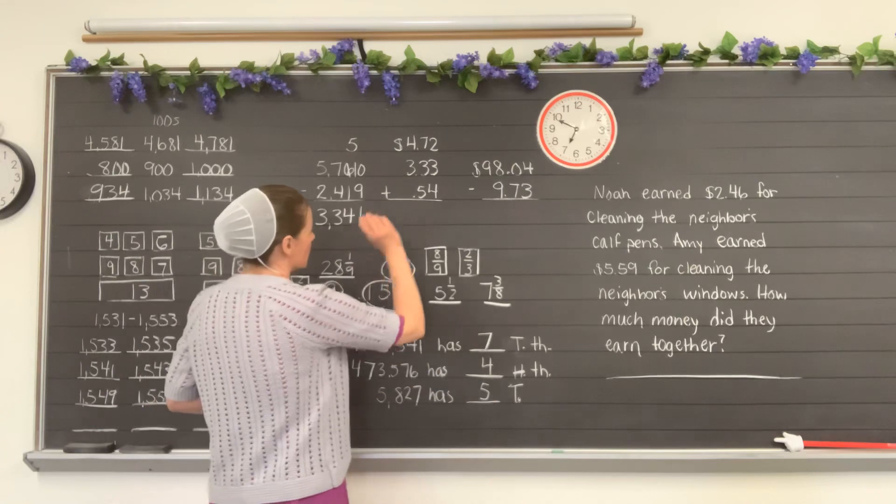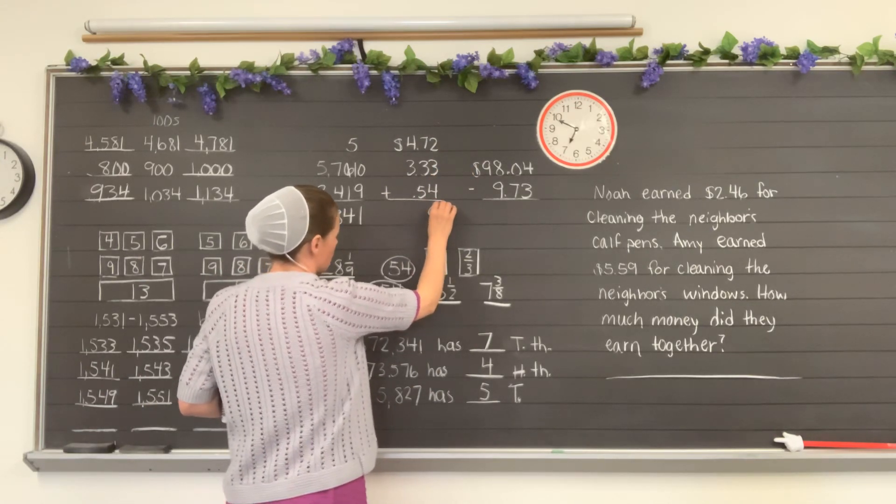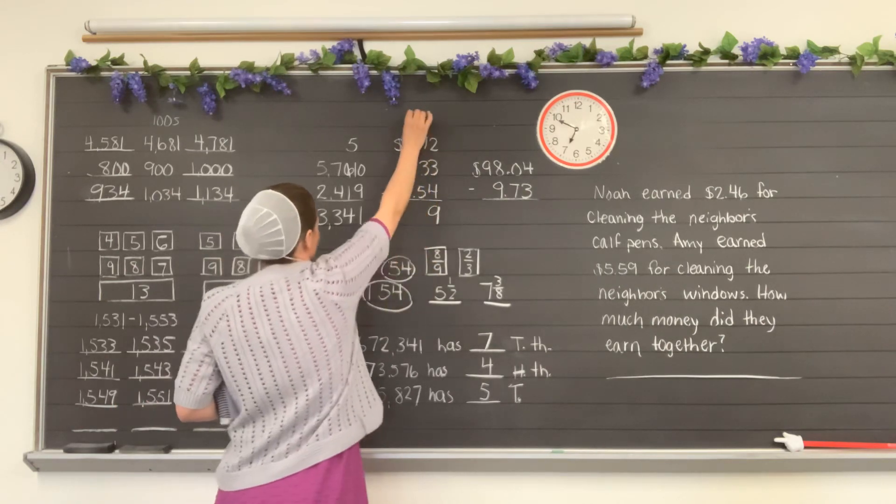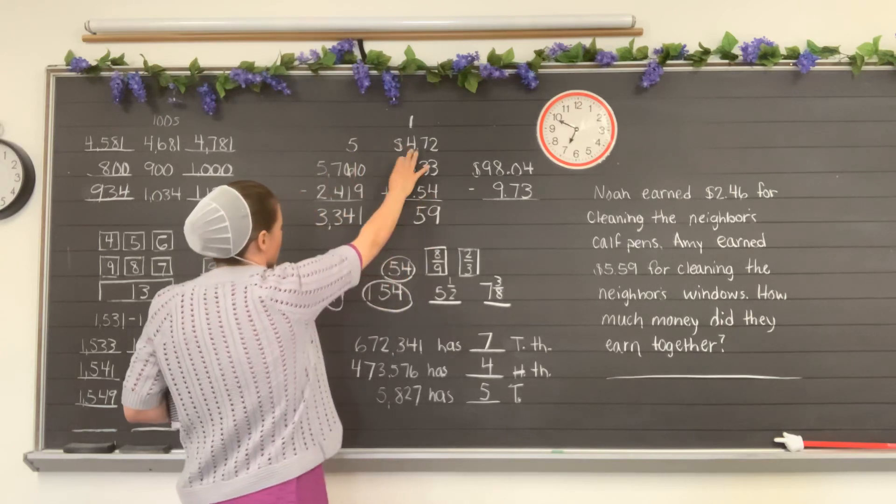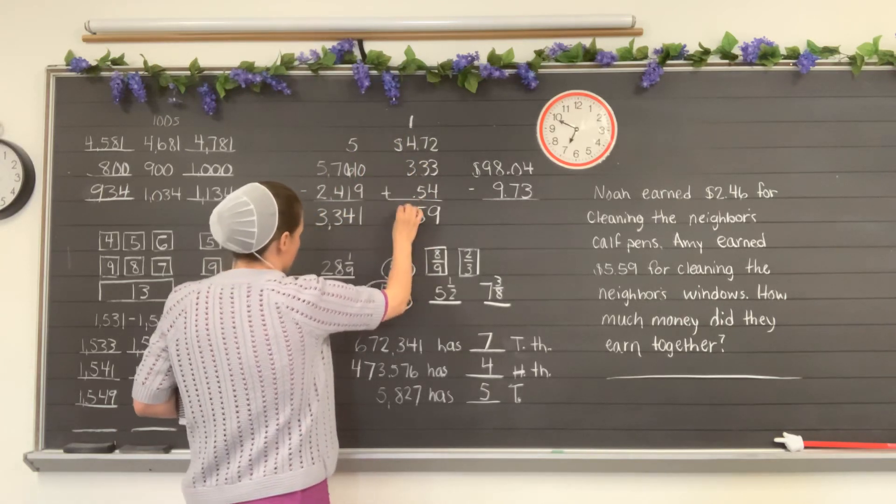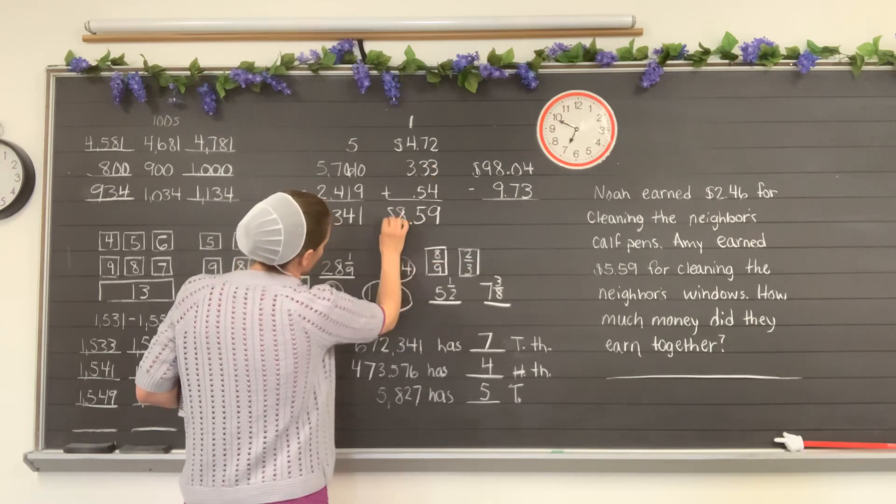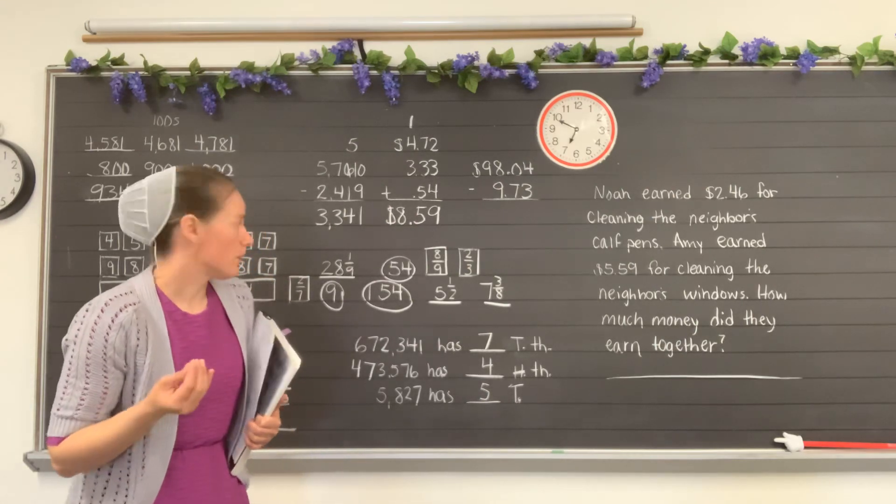Here we have an addition sign, so we need to add. 2 plus 3 is 5, plus 4 is 9. Put my 9 under there. 7 plus 3 is 10, plus 5 is 15. Carry my 1 up there, I'll put my 5 here. 1 plus 4 is 5, plus 3 is 8. Put my 8 directly underneath there, and my decimal point under there and my dollar sign here. Don't forget your dollar signs and decimal points again.